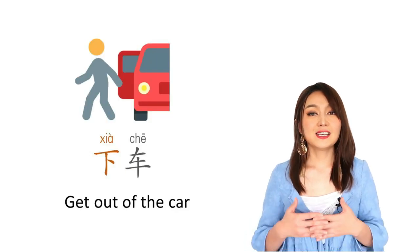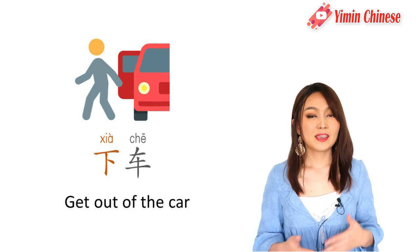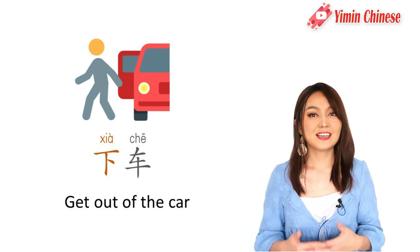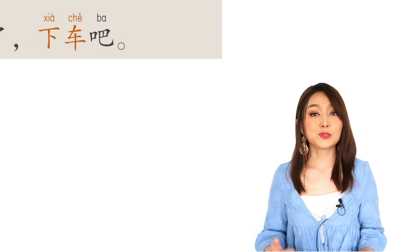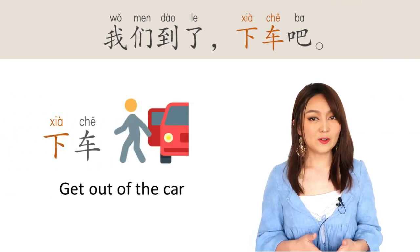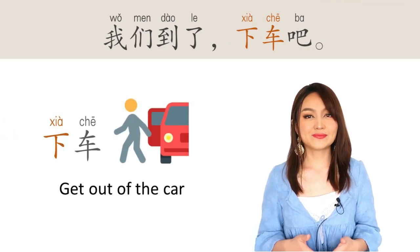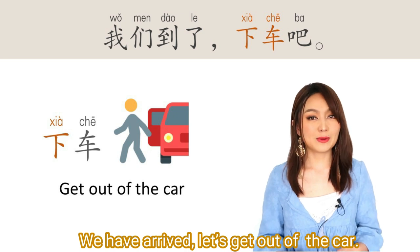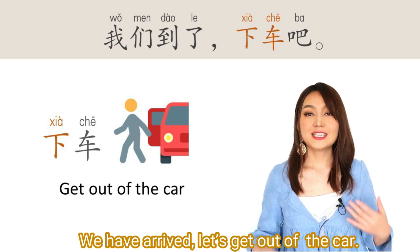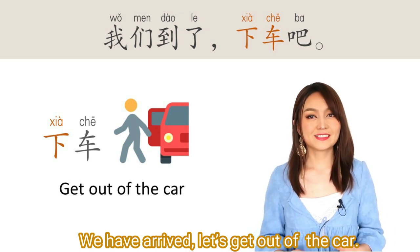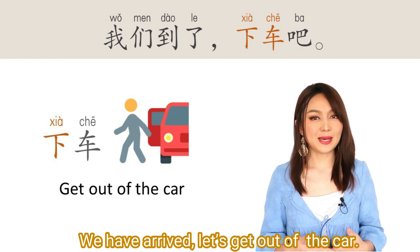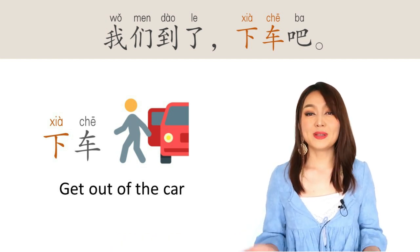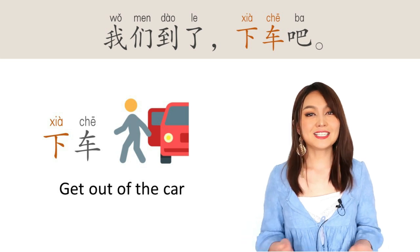下车 — get out of the car. 下车. For example: 我们到了, 下车吧. We have arrived — let's get out of the car. 我们到了, 下车吧.